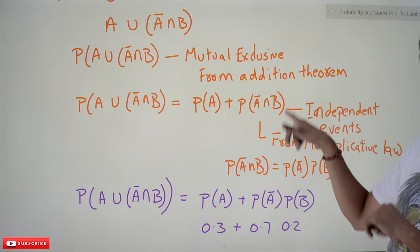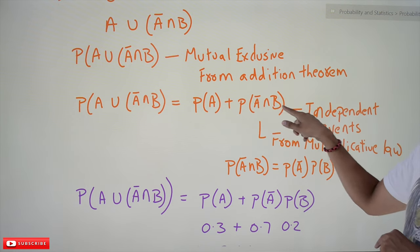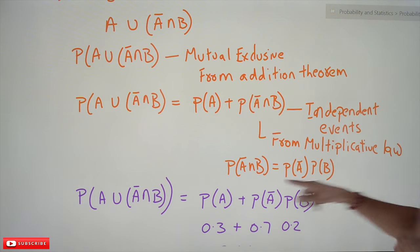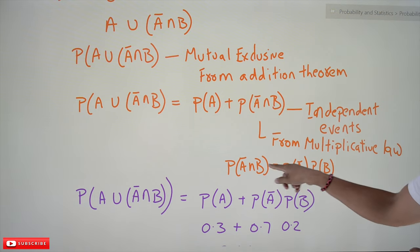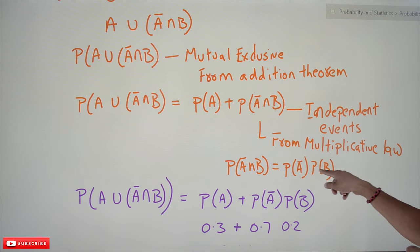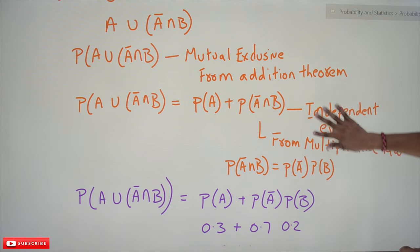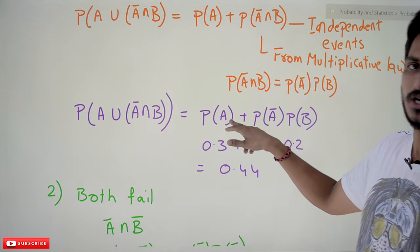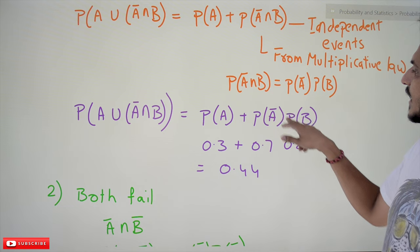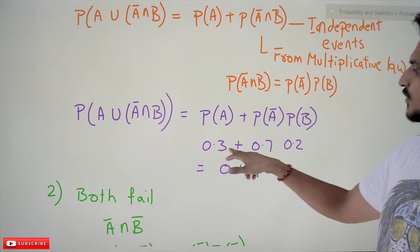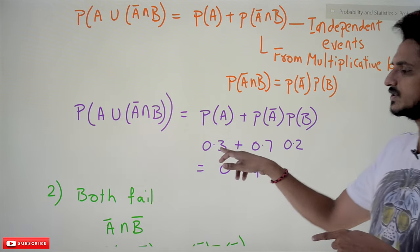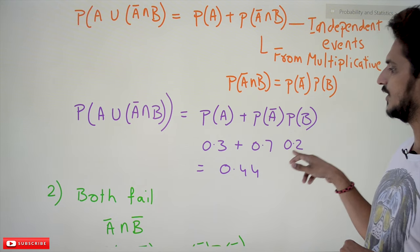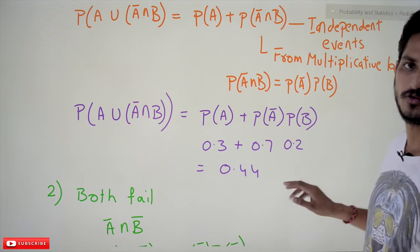Since they are independent events, from the multiplicative law: P(A' ∩ B) = P(A') × P(B). So the final equation is P(A) + P(A') × P(B) = 0.3 + (1 − 0.3) × 0.2 = 0.3 + 0.7 × 0.2 = 0.44.